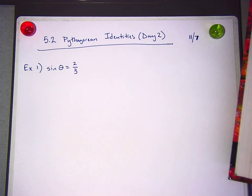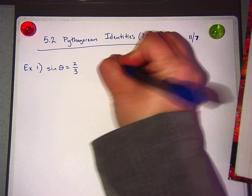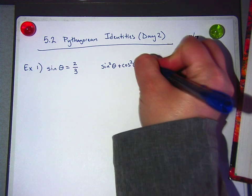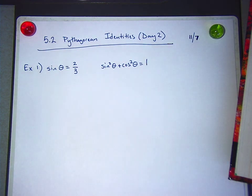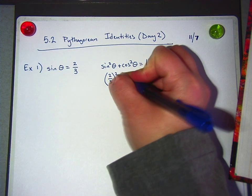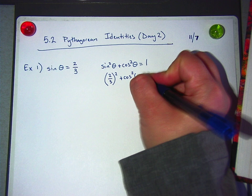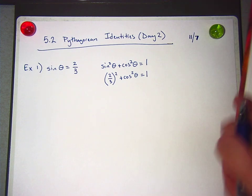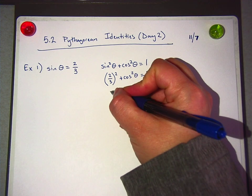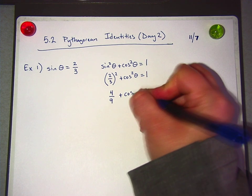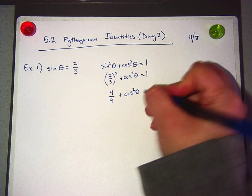So we just found out this, right? Sine squared theta plus cosine squared theta equals one. So I'm going to start by plugging in two-thirds right here. Two-thirds squared plus cosine squared theta equals one. Now what should I do? So simplify two-thirds squared. Yeah, which is what? Four-ninths?